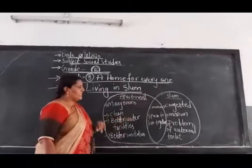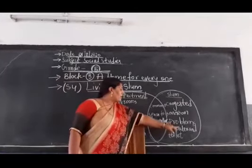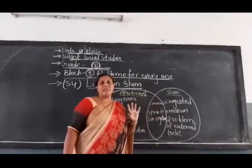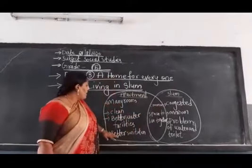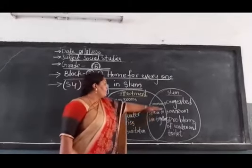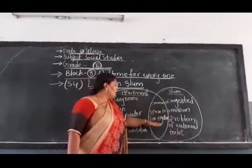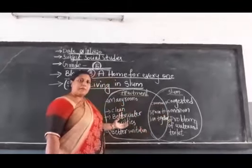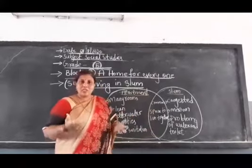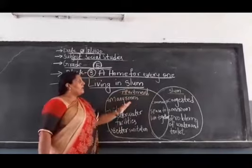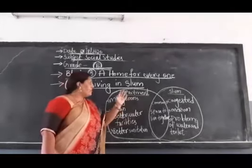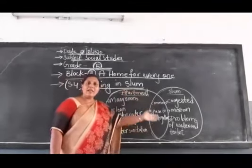Next: better water facility in apartments. What about here in slum? Problems of water and toilet — there is no water and there are no toilets. Only one toilet for many people, as we are studying in this story. Better sanitization in apartments. Now, what is common between these two? The common point is: space to live together. In both the apartment and the slum, we all live together in one place — that is your house, no children? This was the Venn diagram to show you the difference between apartment and slum, and one common point between them.